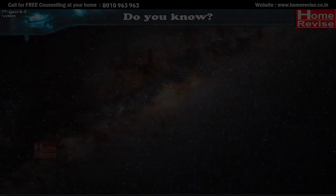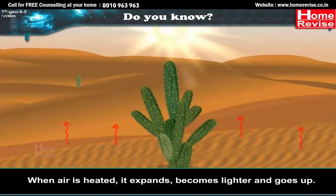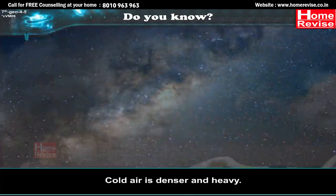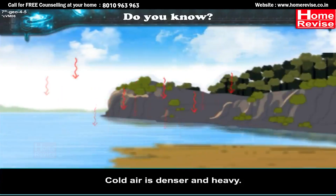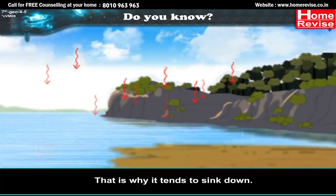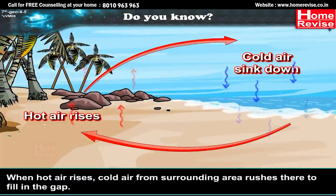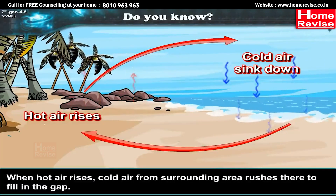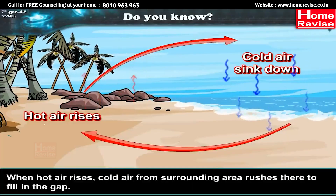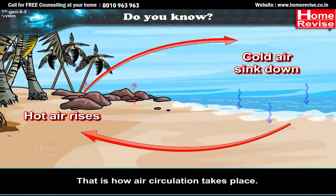When air is heated, it expands, becomes lighter and goes up. Cold air is denser and heavy, so it tends to sink down. When hot air rises, cold air from the surrounding area rushes in to fill the gap. That is how air circulation takes place.